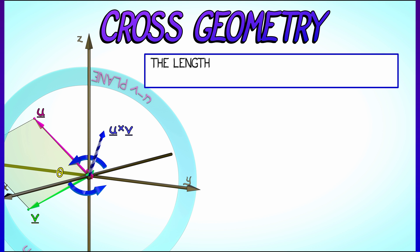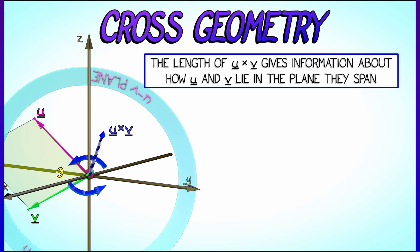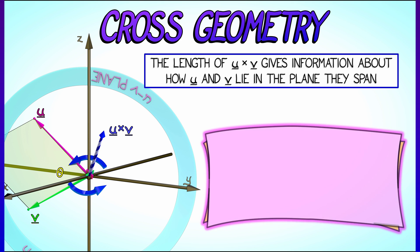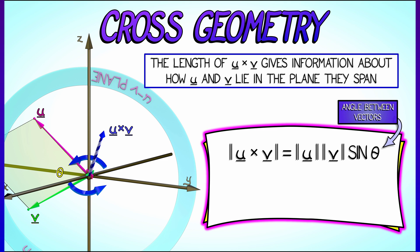We can at this point say a bit more about the geometry of the cross product vector of u cross v. Specifically, the length of u cross v can be expressed in terms of the length of u, the length of v, and the sine of the angle between those two vectors in the u v plane.